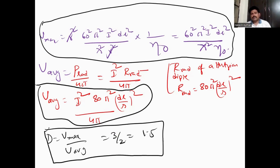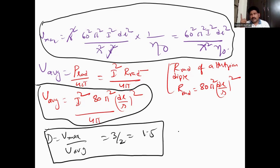This derivation of the Hertzian dipole directivity is very important. It has been utilized when deriving effective aperture area, where the directivity of a Hertzian dipole equal to 1.5 is directly used. This is a very important derivation.